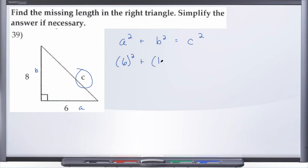Alright, well what is 6²? 6² is 36, and what is 8²? 8² is 64. And 36 + 64 is going to give us c², or 100.